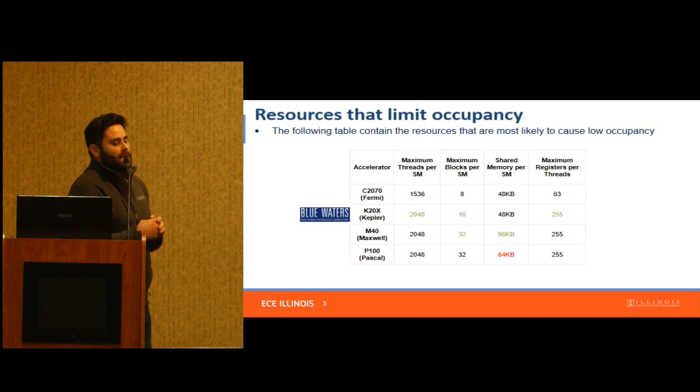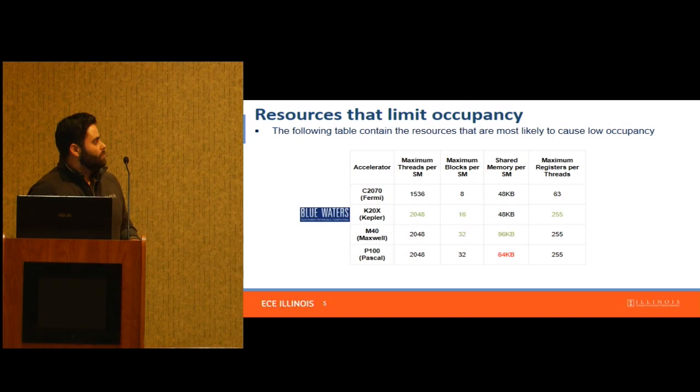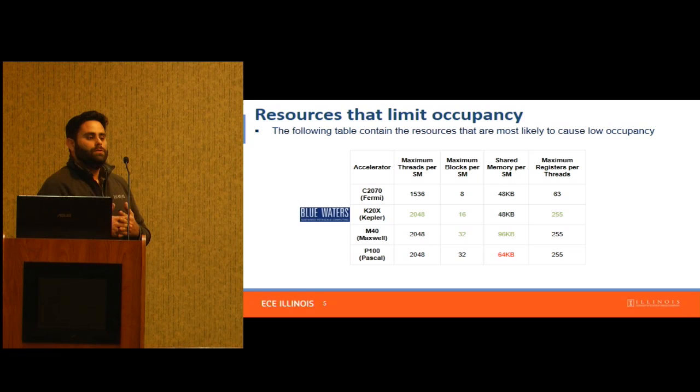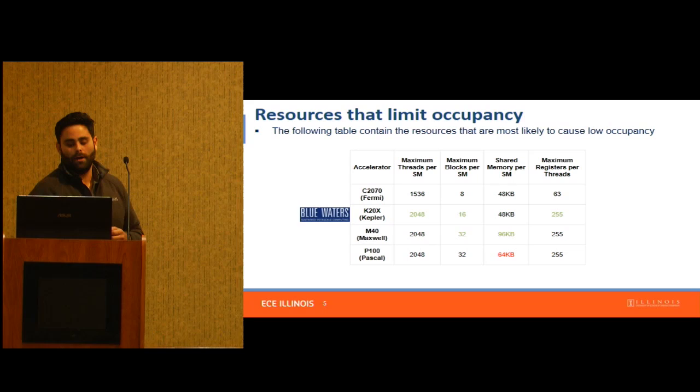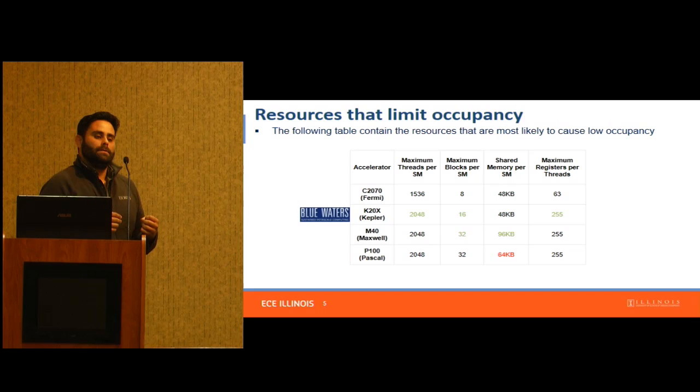You want to look at the right-hand side of this table, where Blue Waters is. Another important story in this table: if you wrote your kernel for the Fermi architecture and want to move to the Kepler architecture in Blue Waters, you got double the number of threads per SM, double the blocks per SM, and an improved number of registers — but shared memory remained constant.